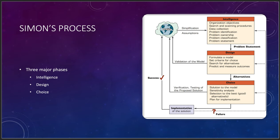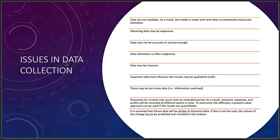Once the problem statement is defined, you move to design: validate the model, formulate it, set criteria for choice, search for alternatives, and predict and measure outcomes. You want to measure outcomes against at least two historical checkmarks to confirm the model reflects reality. Then in the choice phase, do sensitivity analysis, select the best alternative, and plan for implementation — checking whether the outcome actually reflects reality.